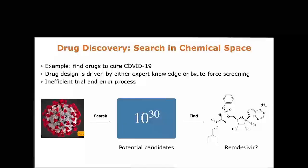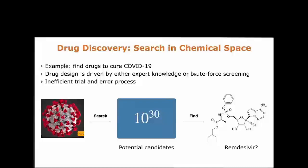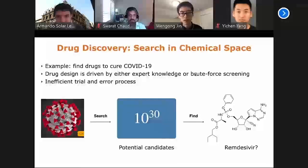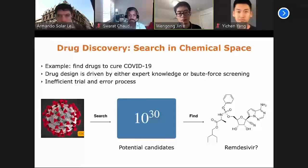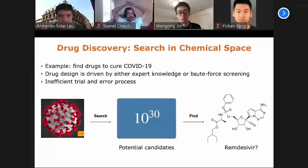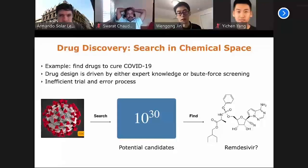Drug discovery is a very challenging problem. The goal is to find molecules that satisfy all the constraints of the properties. For example, if you want to find a cure for COVID-19, then you want a molecule that is antiviral, safe, and can be digested by the human body. There are a lot of constraints. You can think of it as a search process over a universe of molecules — up to 10 to the 30th or more — and you want to find good molecules out of this vast chemical space.